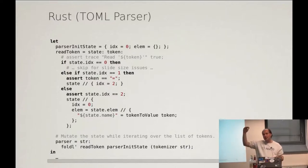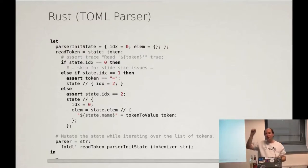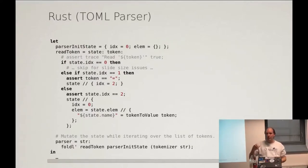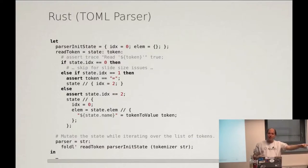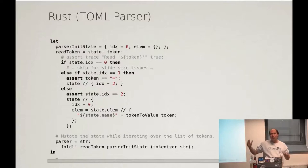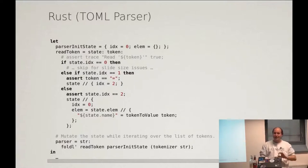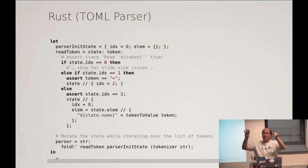We have an initial state — we are in state 0 with some context. When we iterate through the tokens, in state 0 we match the name and store it into the state, then increase the state counter to state 1. In state 1 we expect the token to always be equals. Then we go to state 2 where we match a value — a string, boolean, or whatever. The token-to-value function gives us the value interpreted from the TOML file and we set it to the name. It's really simple: just going through states saying, when I hit this token in this state, I go to this other state.